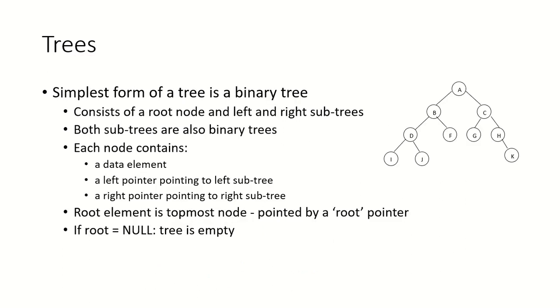The simplest form of a tree is a binary tree. Here we have a root node and left and right subtrees, and both subtrees are also binary trees. Each node has two children. If we look at root node A, it has two children B and C.